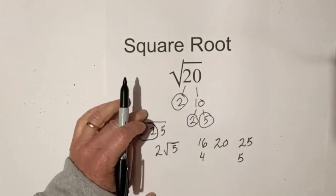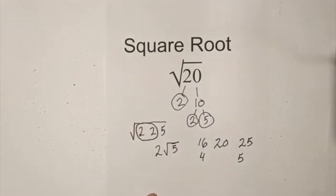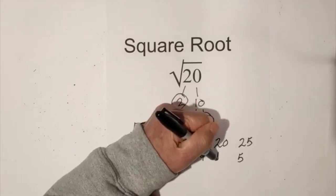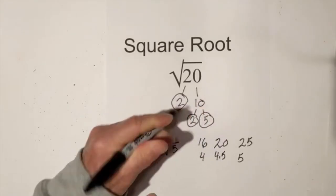So 20 is going to be roughly somewhere in between that. So I'm going to say the ballpark is 4.5.